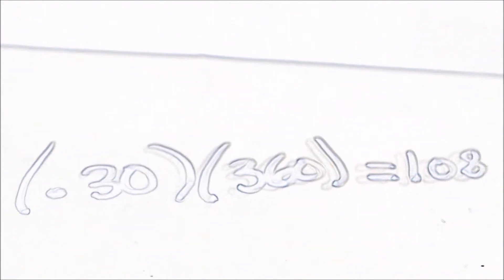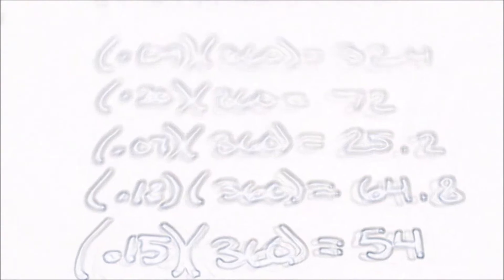So .30 times 360 is going to equal 108. You do that to all the other decimals, multiply it by 360. And those are the answers you should get. Another example is inscribed angles.